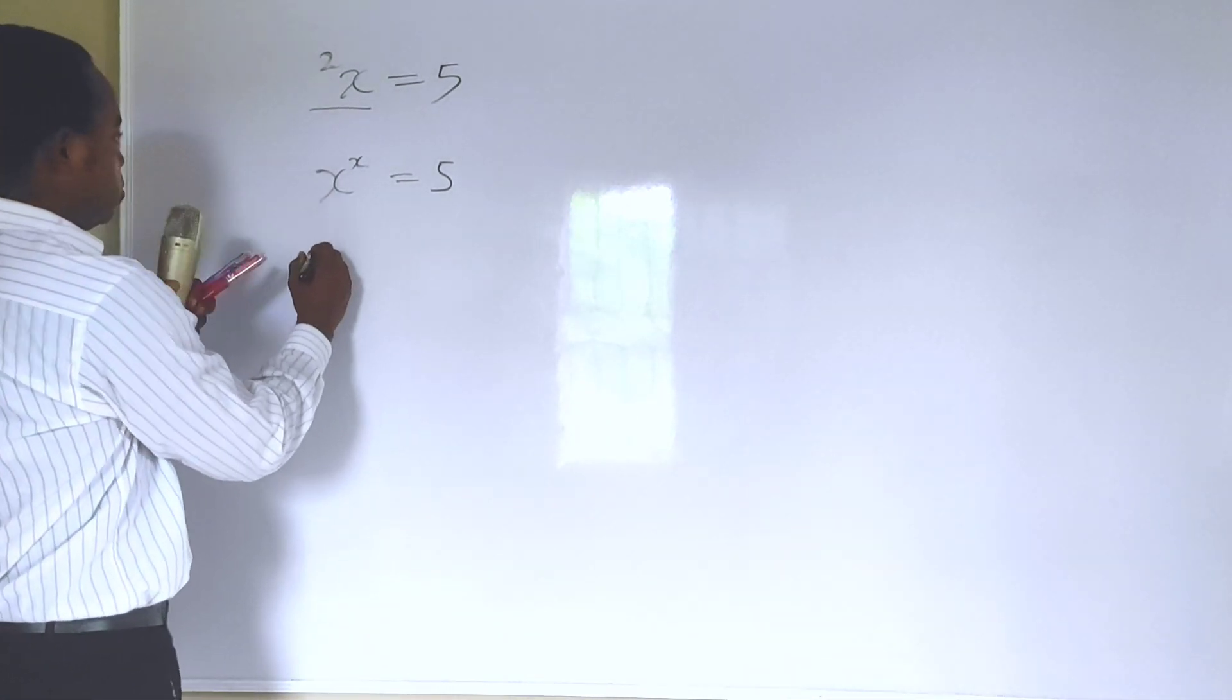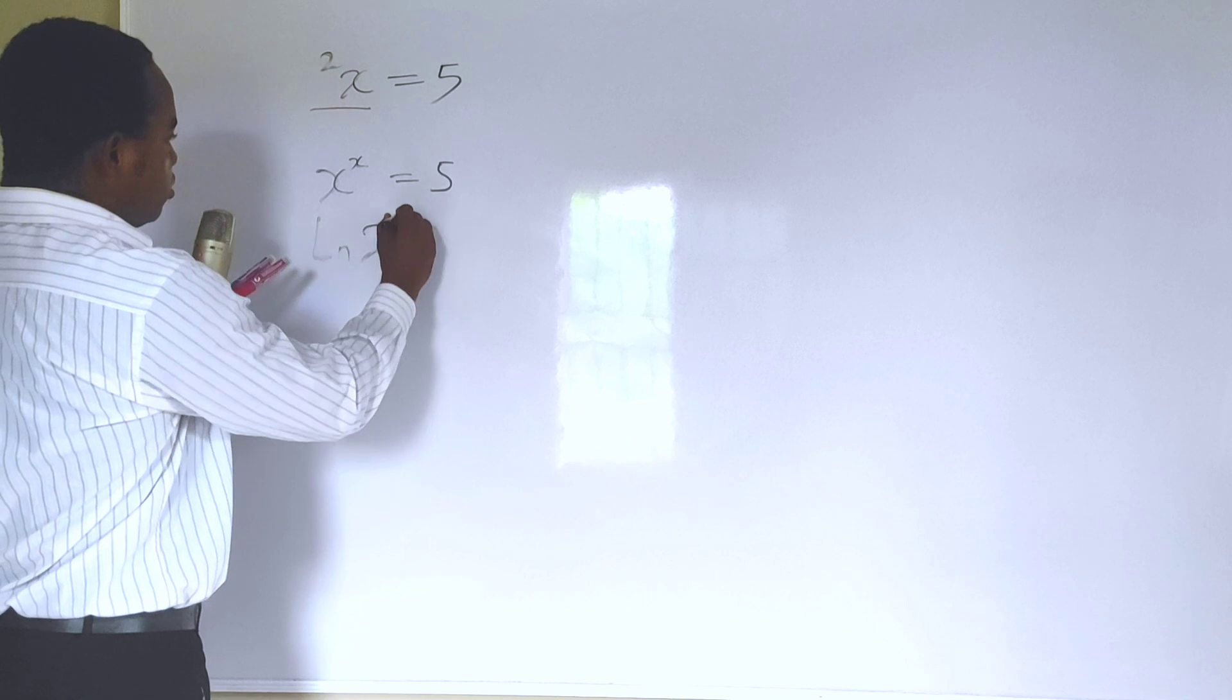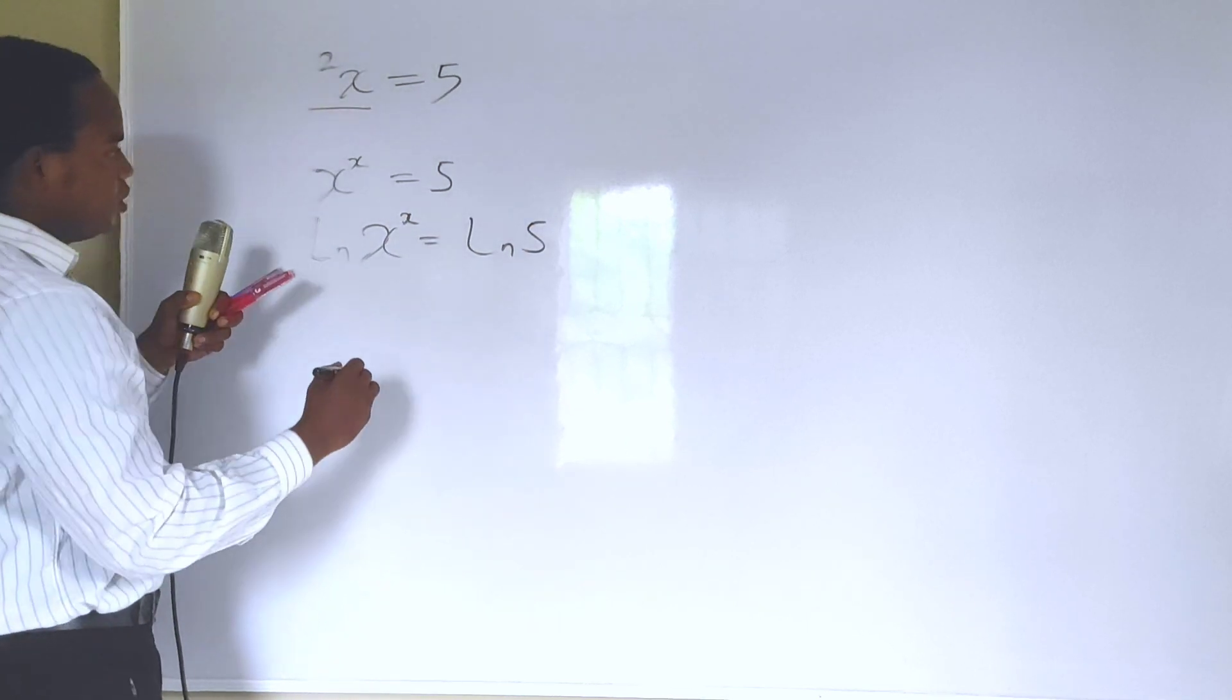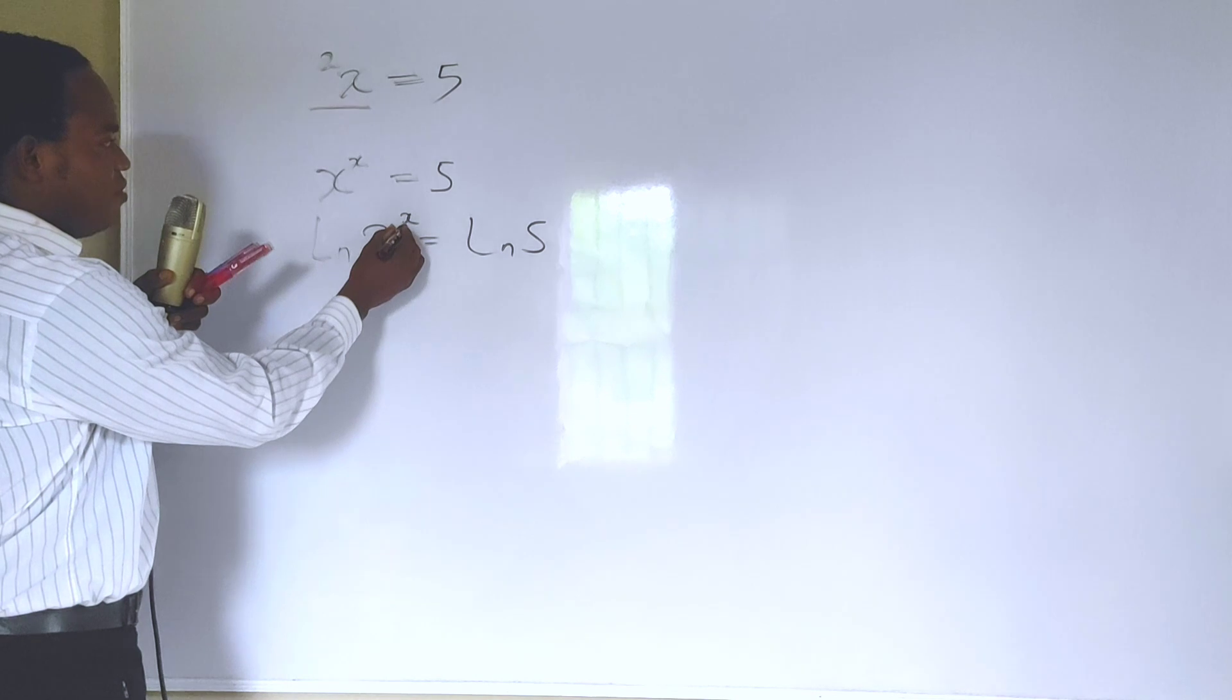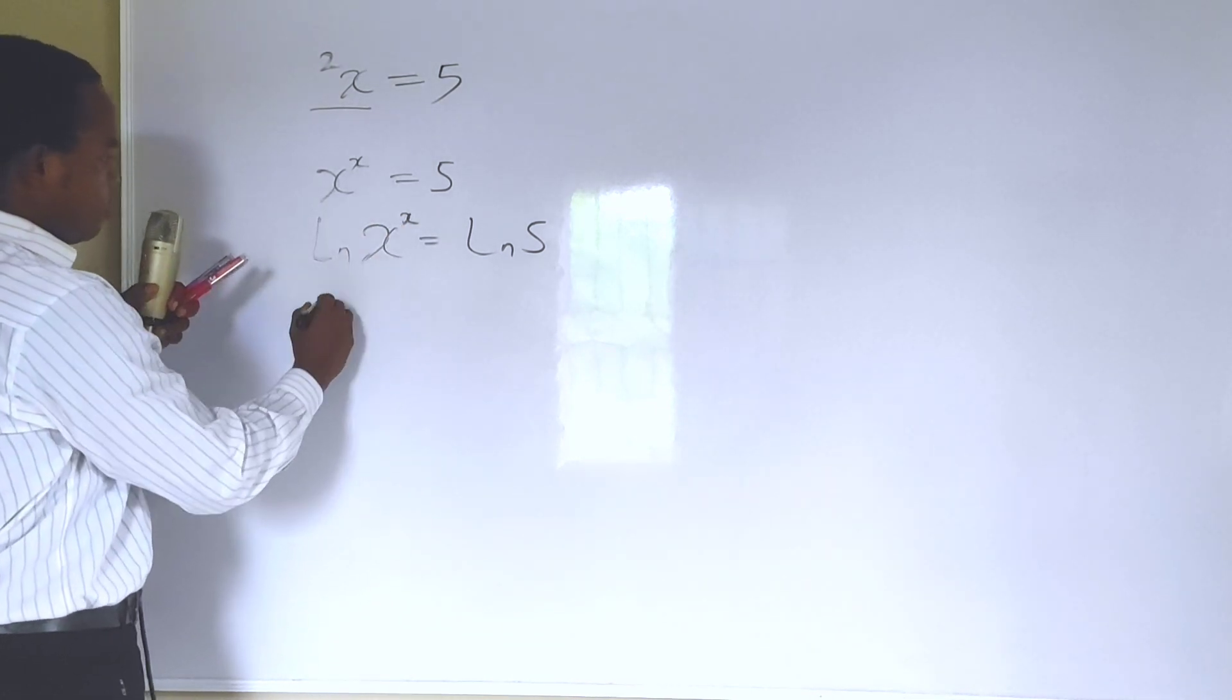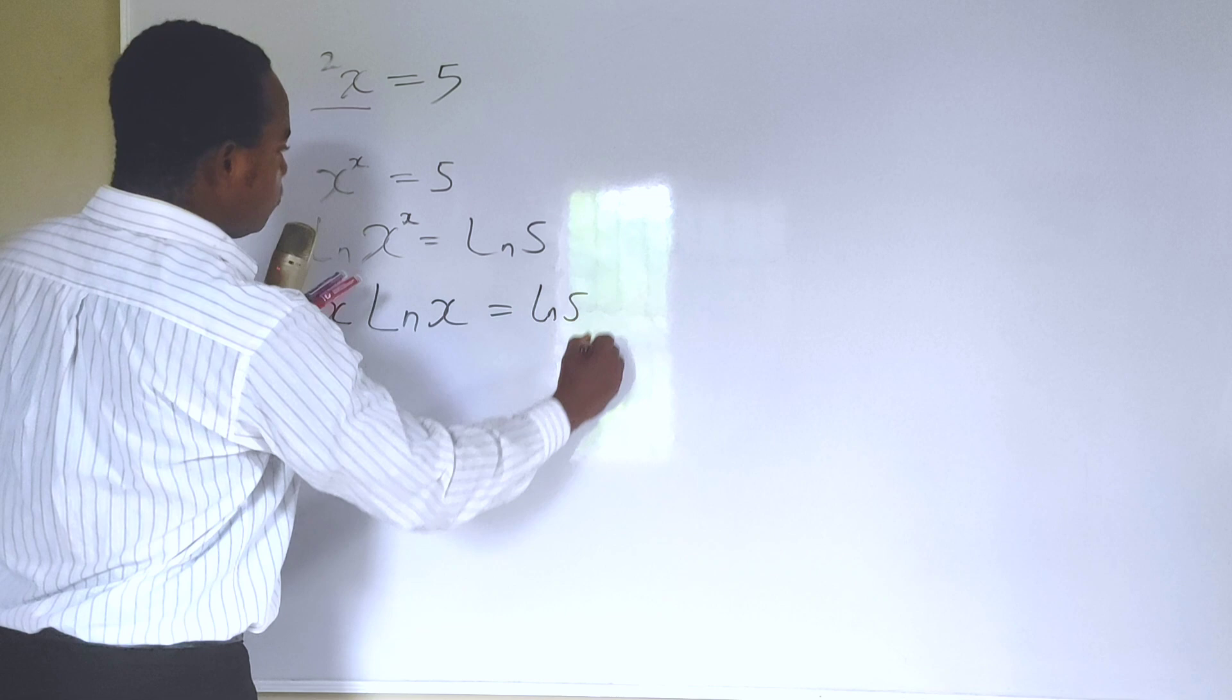If I introduce natural log to both sides, we're going to be having the natural log of x to the x power is equal to the natural log of 5. There is a rule of log that says when you have a power here, you can bring it down as x natural log of x equals the natural log of 5.